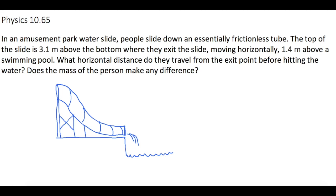So they tell us the slide where they're starting out is 3.1 meters. And they also tell us when they shoot out the bottom of the slide here that they are 1.4 meters above where the water is. And then what horizontal distance do they travel from the exit point before hitting the water? So we want to know this delta x right here.